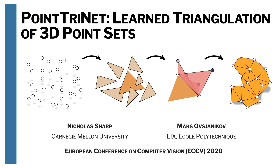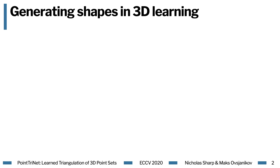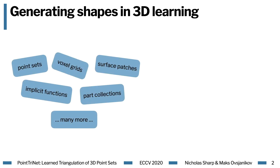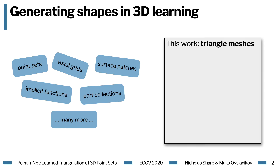I'm Nick Sharp, and this is PointTriNet: Learn Triangulation of 3D Point Sets. We study the problem of generating 3D shapes in geometric learning. It's a very exciting time for this problem, with recent strategies using a wide range of representations. In this work, we'll present a new method which directly generates triangle meshes as output.